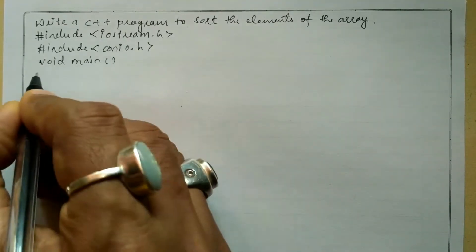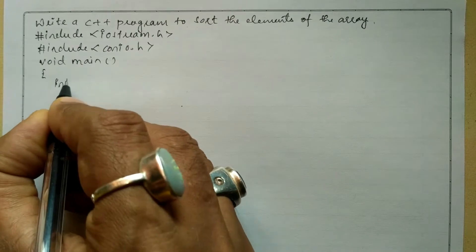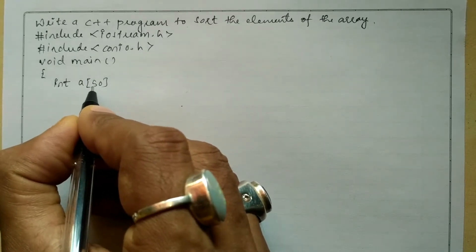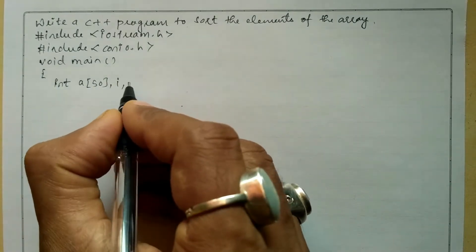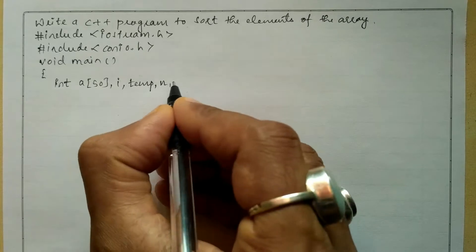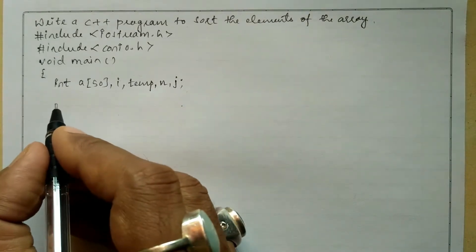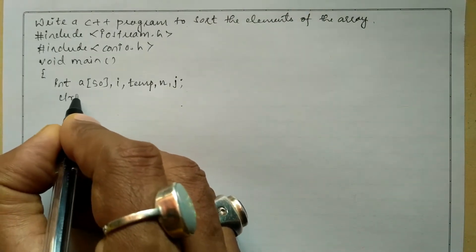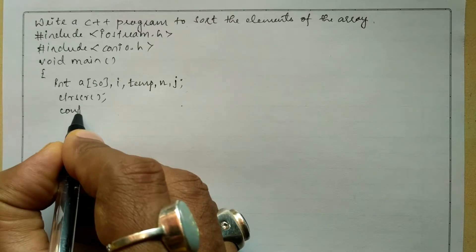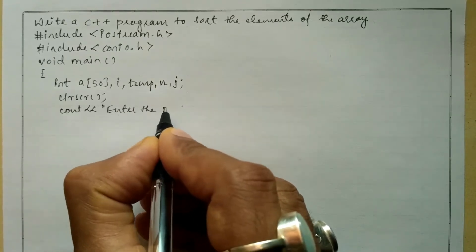Now let us write the void main function with an open curly brace. In the declaration section we are going to declare all the necessary variables: int a[50] — an array of size 50 — then i for index, a temporary variable temp, n for number of elements, and j as one more subscript. Now let us write the clrscr() function to clear the screen. We will ask the user to enter how many elements using a cout statement: 'Enter the number of elements'.